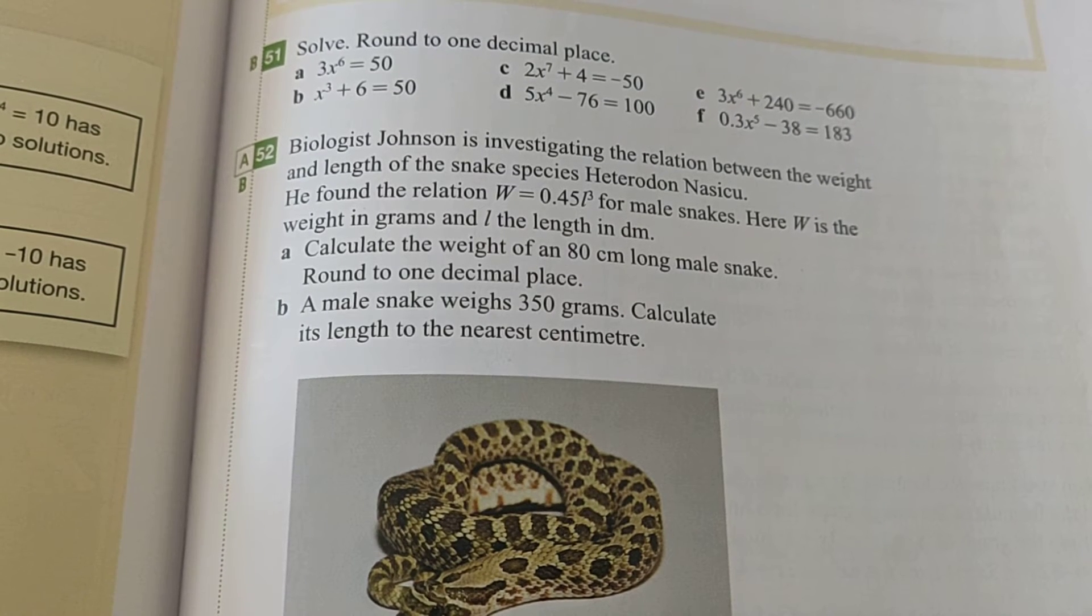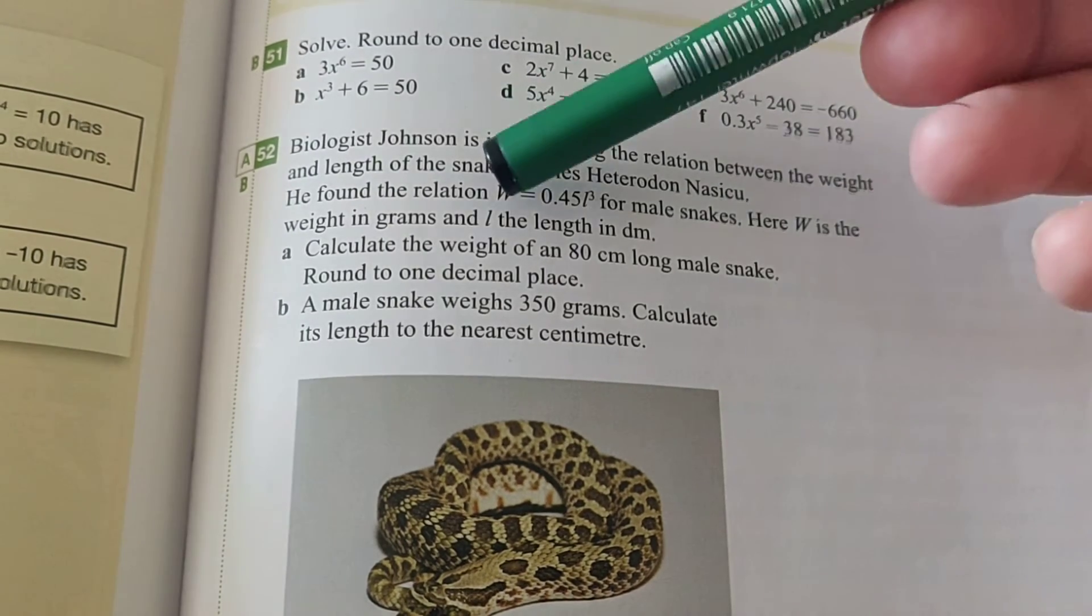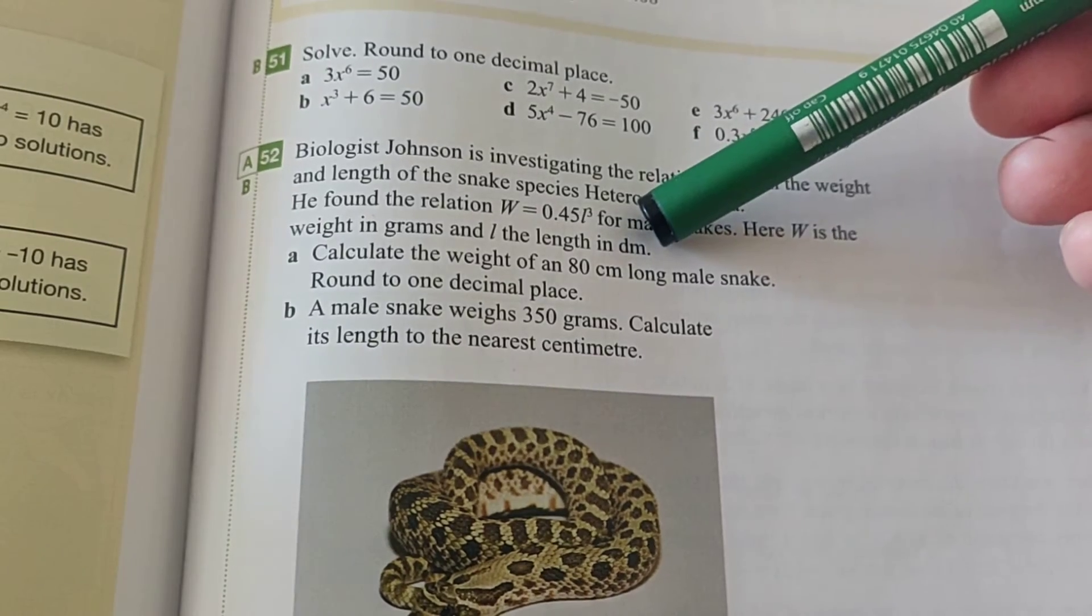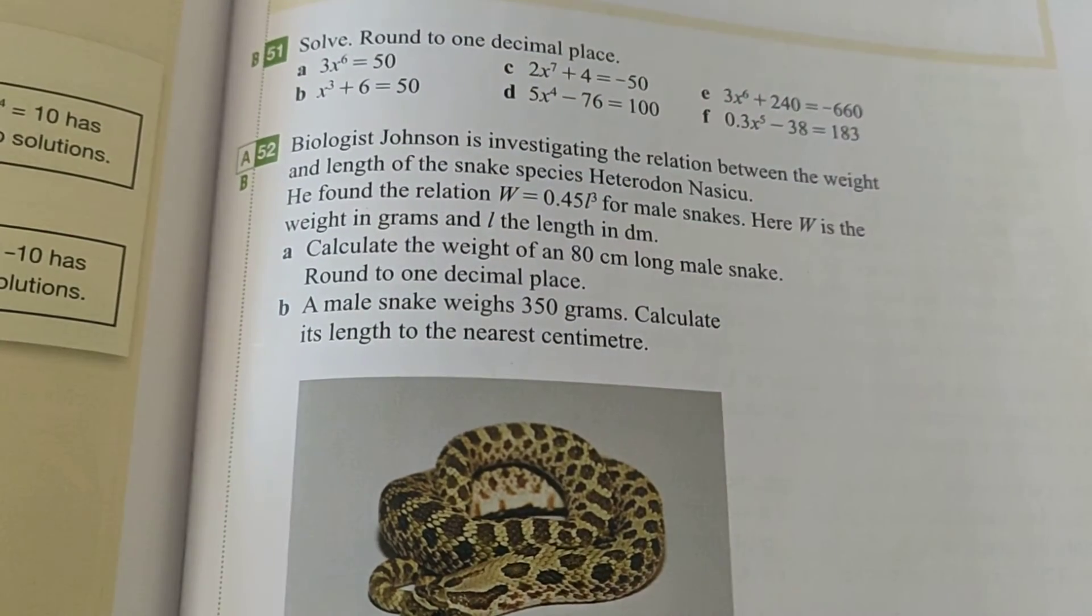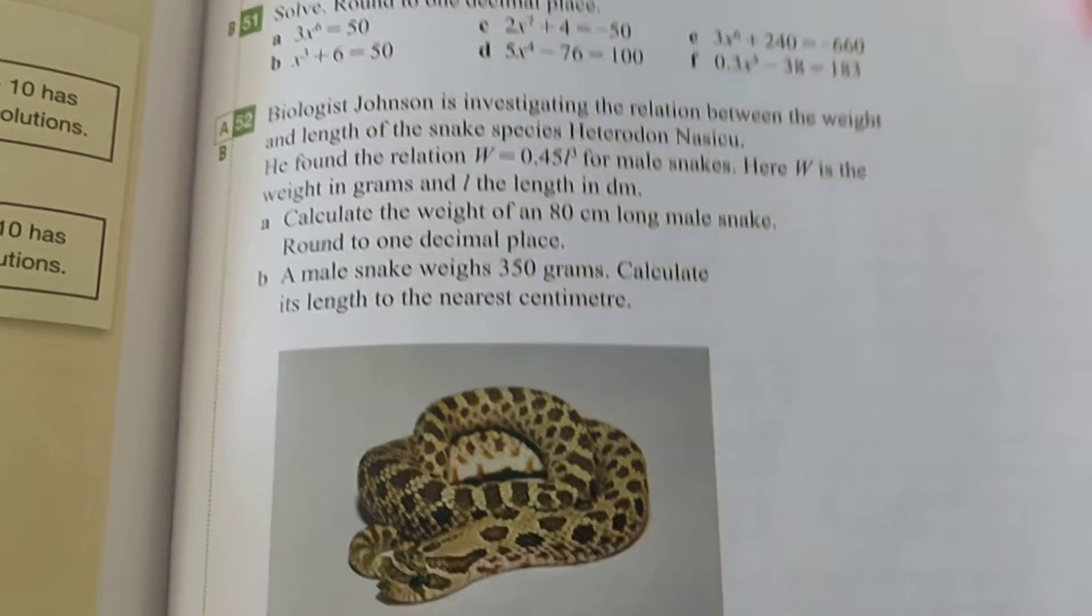Calculate the weight of an 80 centimeter long male snake. Round off to one decimal place. Now please notice one thing. Here it says, L is the length in decimeters. And here we get a length in centimeters. So 80 centimeters needs to be 8 decimeters, and then we can calculate something.